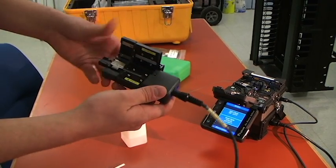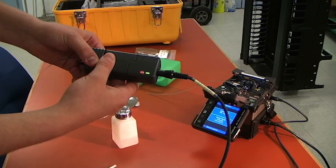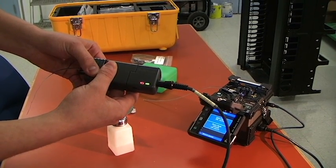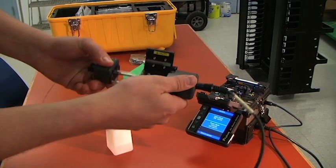We'll insert it here in the hot jacket stripper just like last time. Wait for the ready light to turn green. Strip that coating off.